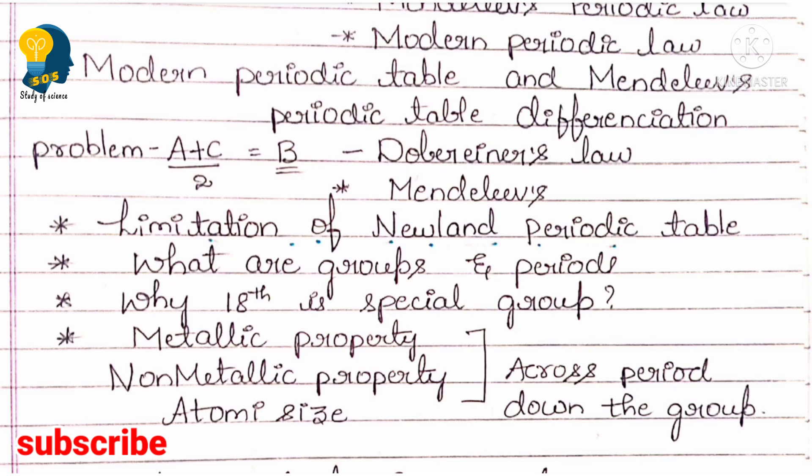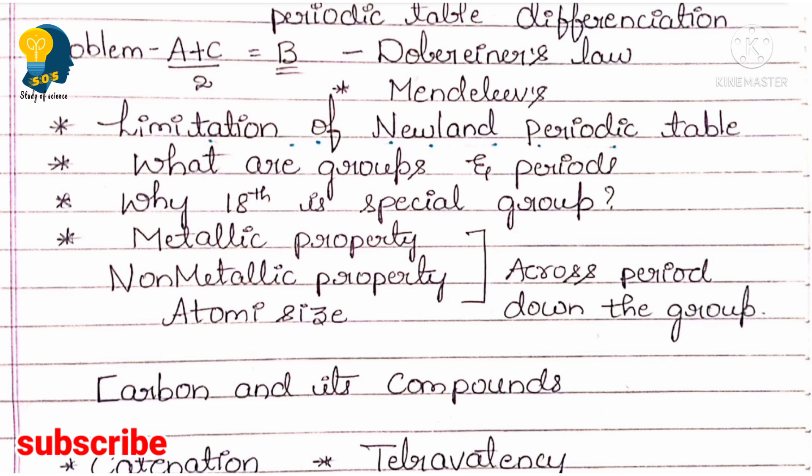I am also conducting a crash course where I explain each lesson in one shot, followed by the most frequently asked questions. If you are new to my channel, watch the crash course videos and the scoring package playlist. You should know what happens to metallic property across the period and down the group, the same for non-metallic property and atomic size. In both model and state preparatory papers, four marks are allotted for Periodic Classification.